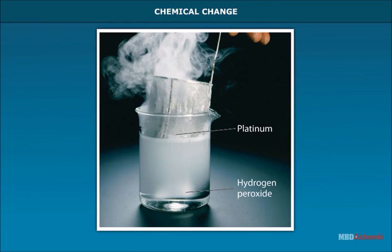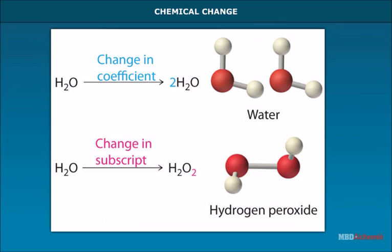In a chemical change, a new substance or substances are formed. The properties of the substance change and this change is permanent in nature. The original substance cannot be obtained.